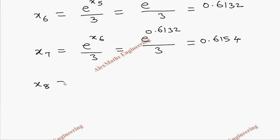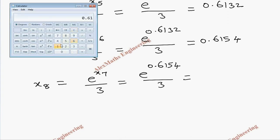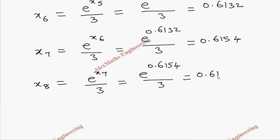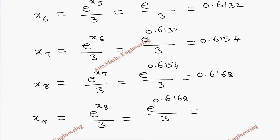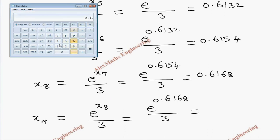Then x₈ = e^(x₇) / 3 = e^0.6154 / 3. Calculating: 0.6154 → e^x → divide by 3 gives 0.6168, so x₈ = 0.6168. Then x₉ = e^0.6168 / 3. Calculating: 0.6168 → e^x → divide by 3 gives x₉ = 0.6177.